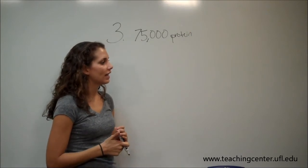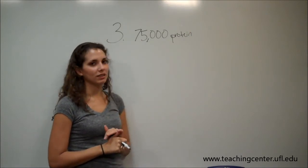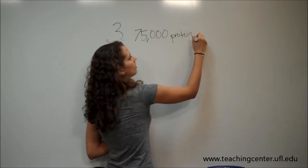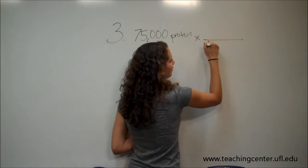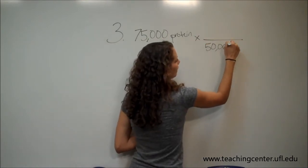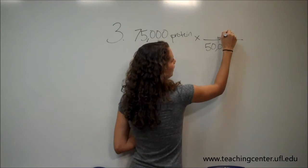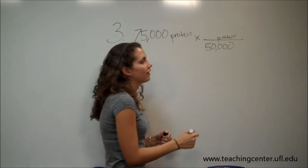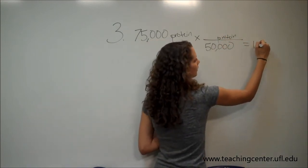It also says that the average molecular weight per protein is 50,000, so we can use dimensional analysis to find out the amount of proteins. So when we solve this, we find that there are 1.5 moles protein.